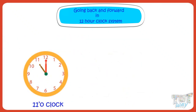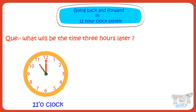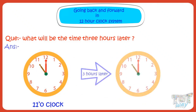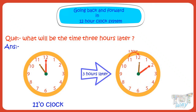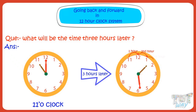Now, what will be the time three hours later? Let's see! When one hour has passed, the hour hand will move from 11 to 12. When the second hour has passed, the hour hand will move from 12 to 1. When the third hour has passed, the hour hand will move from 1 to 2. So after three hours, the time will be 2 o'clock.